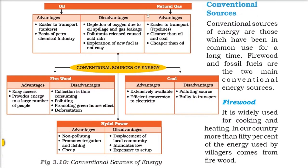Conventional sources of energy are those which we have been using for a long time, like firewood and fossil fuels — these are the two main conventional energy sources. For cooking and heating, firewood is widely used in our country; more than 50% of the energy used by villagers comes from firewood.